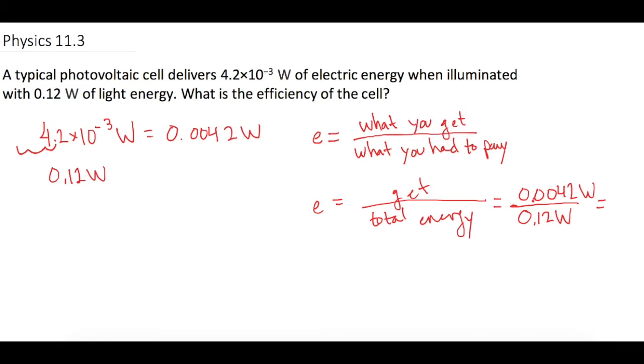So 0.0042 divided by 0.12 gives us an efficiency of 0.035. If we want to change that to an actual percentage, which they want in Mastering Physics, we multiply by 100 or move the decimal over two places, and we get an efficiency of 3.5%.